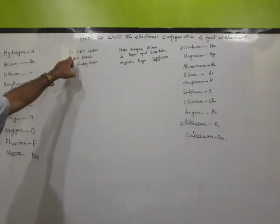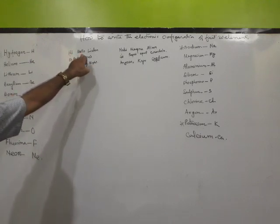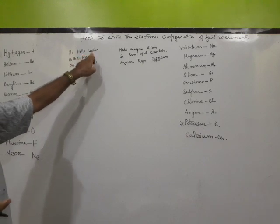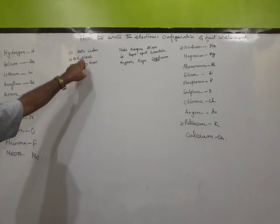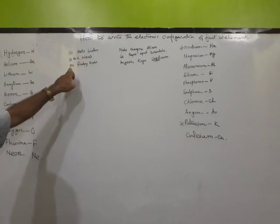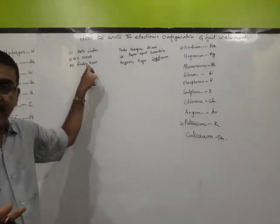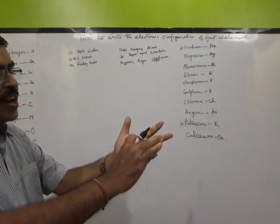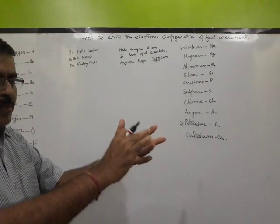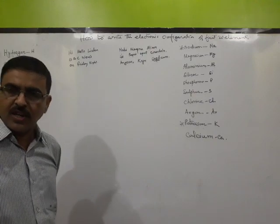Hi stands for hydrogen, Hello for helium, Listen for lithium. Then B for beryllium, B for boron, C for carbon, N for nitrogen, O for oxygen, F for fluorine, and neon. So: hydrogen, helium, lithium, beryllium, boron, carbon, nitrogen, oxygen, fluorine, neon.